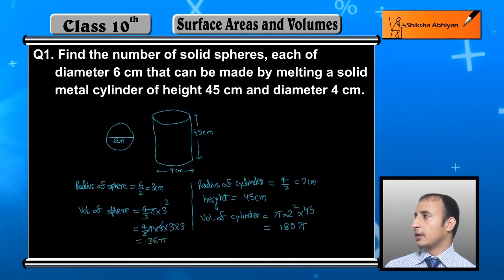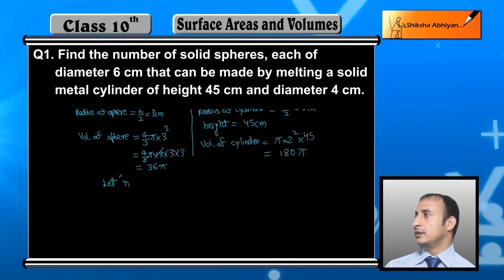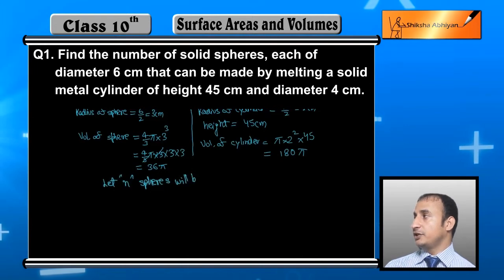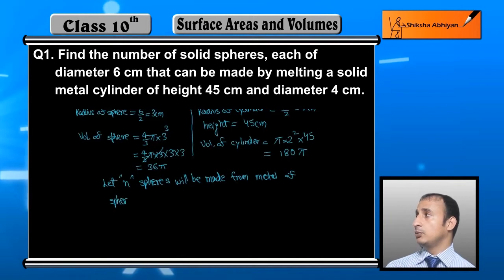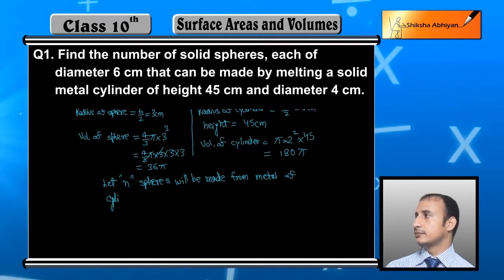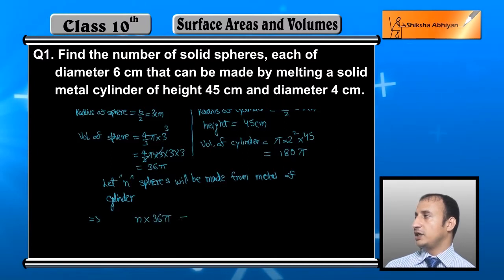Now let n spheres will be formed from the metal of cylinder. The volumes will be the same, so therefore n into 36 pi will equal to 180 pi. These volumes are equal.